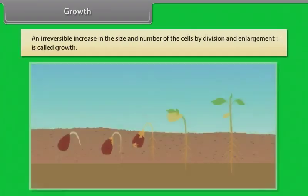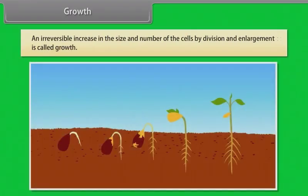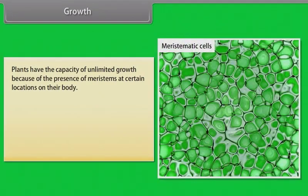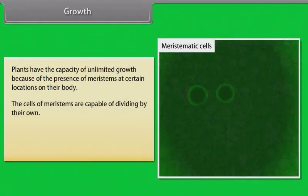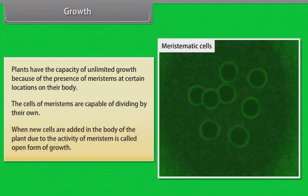An irreversible increase in the size and number of cells by division and enlargement is called growth. In plants, the growth generally is indeterminate. Plants have the capacity of unlimited growth because of the presence of meristems at certain locations on their body. The cells of meristems are capable of dividing by their own. When new cells are added in the body of the plant due to the activity of meristem, it is called open form of growth.